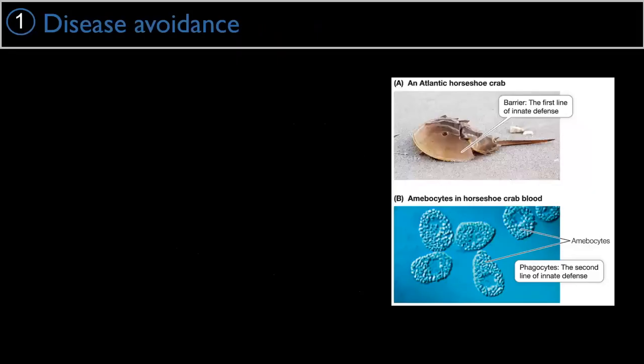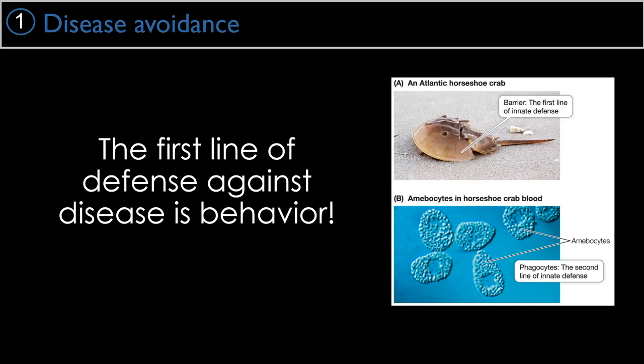The textbook says the first barrier against disease is your outer body layer — a horseshoe crab has its hard shell. But I happen to disagree. I think the first line of defense against disease is behavior. You don't need a hard shell to protect you from parasites if you don't meet the parasites in the first place. Behavior drives the initial interaction with parasites.